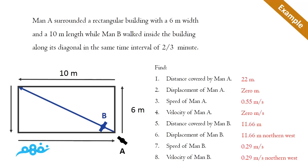Man B covered a distance equal to the diagonal of the rectangle. We can get it by the rules of geometry and by Pythagoras, which equals 11.66 meters. This is the distance and also equals the displacement. In this case, the distance equals the displacement because the man walks in a